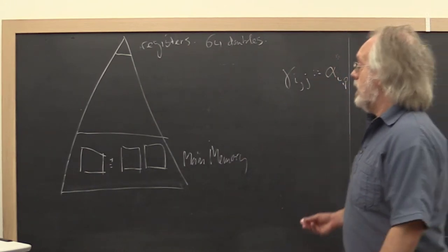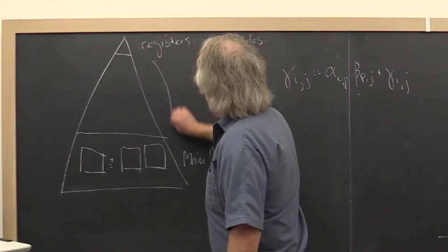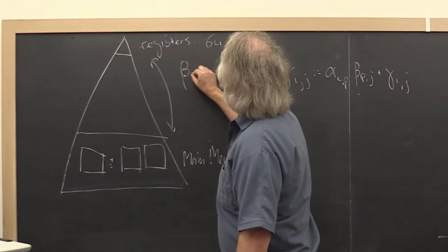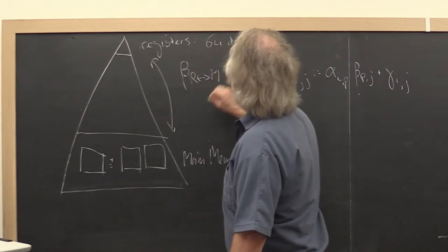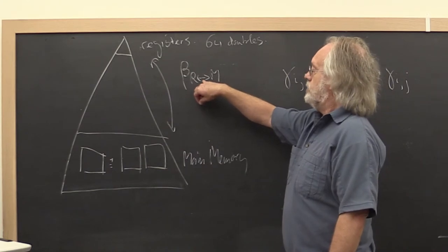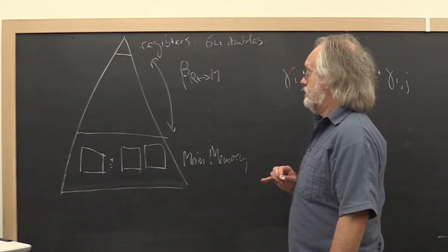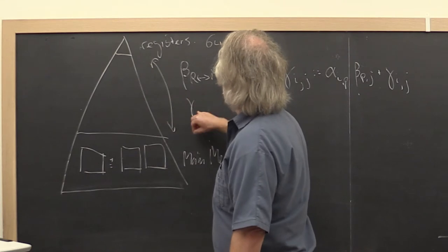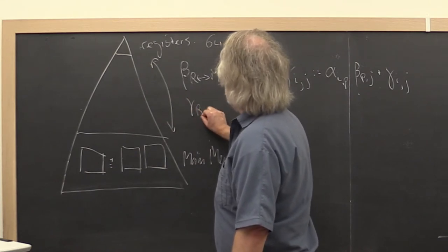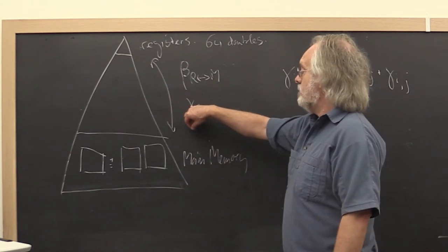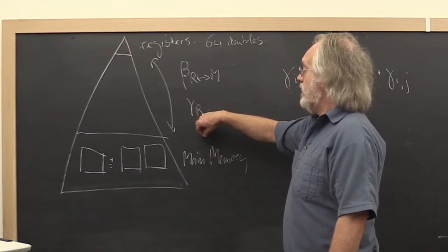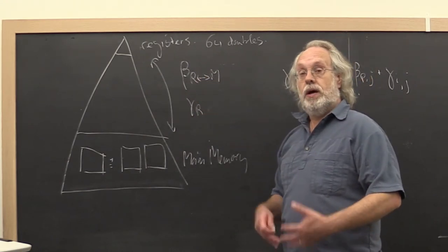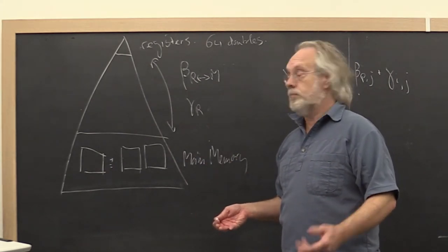So in our model we're going to say that moving data back and forth between registers requires time beta_rm. That's a double arrow. So it's the time required to move data between registers and memory. And then the cost of doing a floating point operation we're going to model with gamma_r. The sub r here indicates the time required to do a floating point operation when the data is in registers. And with that we can then do estimates of how much time it takes to perform various computations.